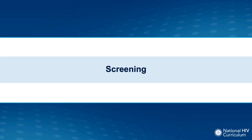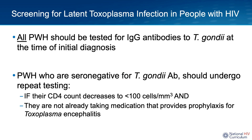Now let's discuss screening for toxoplasma exposure. Because of the risk of significant neurological disease with toxoplasma encephalitis, the adult and adolescent opportunistic infection guidelines recommend that all people with HIV be screened for prior toxoplasma exposure at the time of their initial HIV diagnosis.